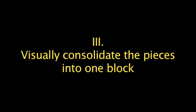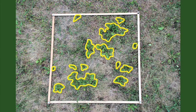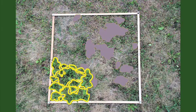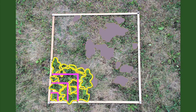A third method of estimation is to visually join all the pieces into one block and then to estimate the percent cover of that block. By comparison with our visual images of 1%, 5%, and 10%, we can estimate the cover of the block to be about 15% to 20%.